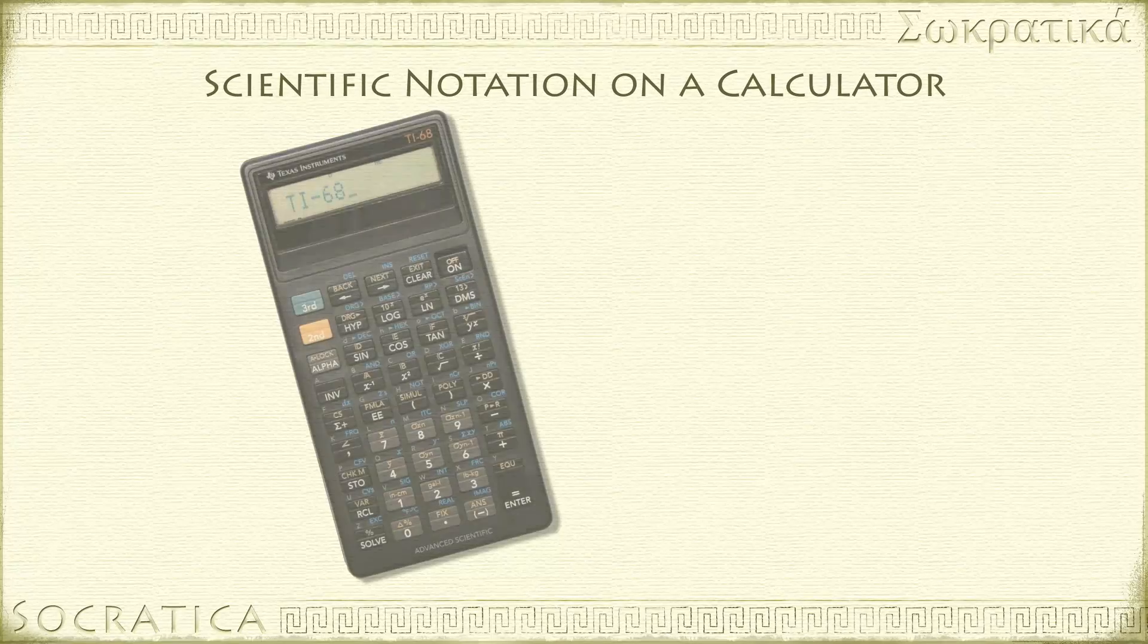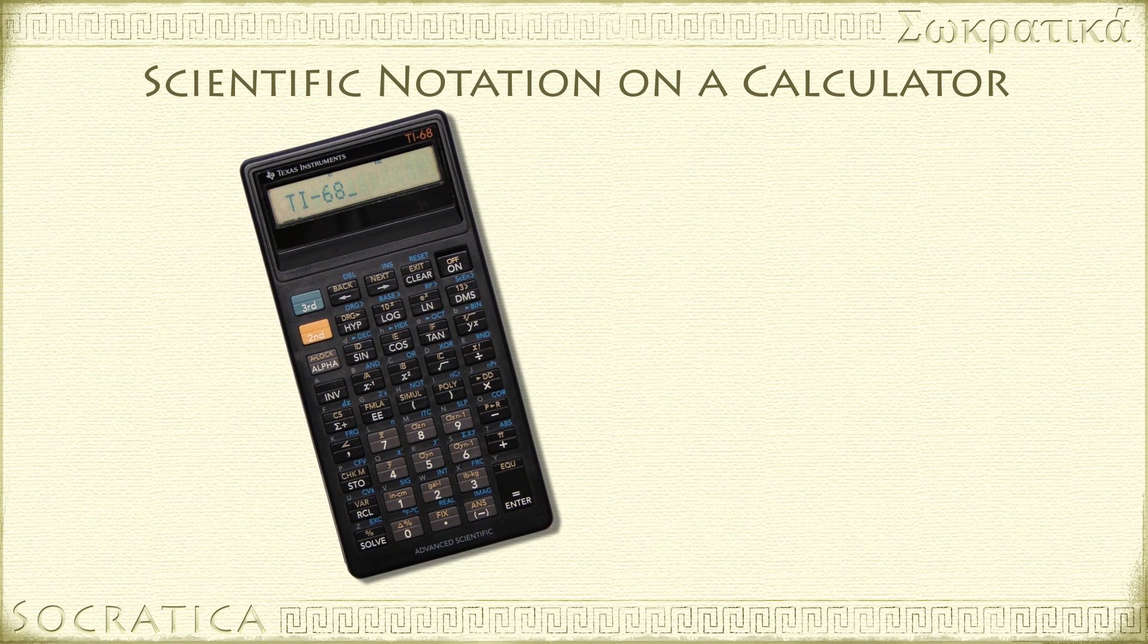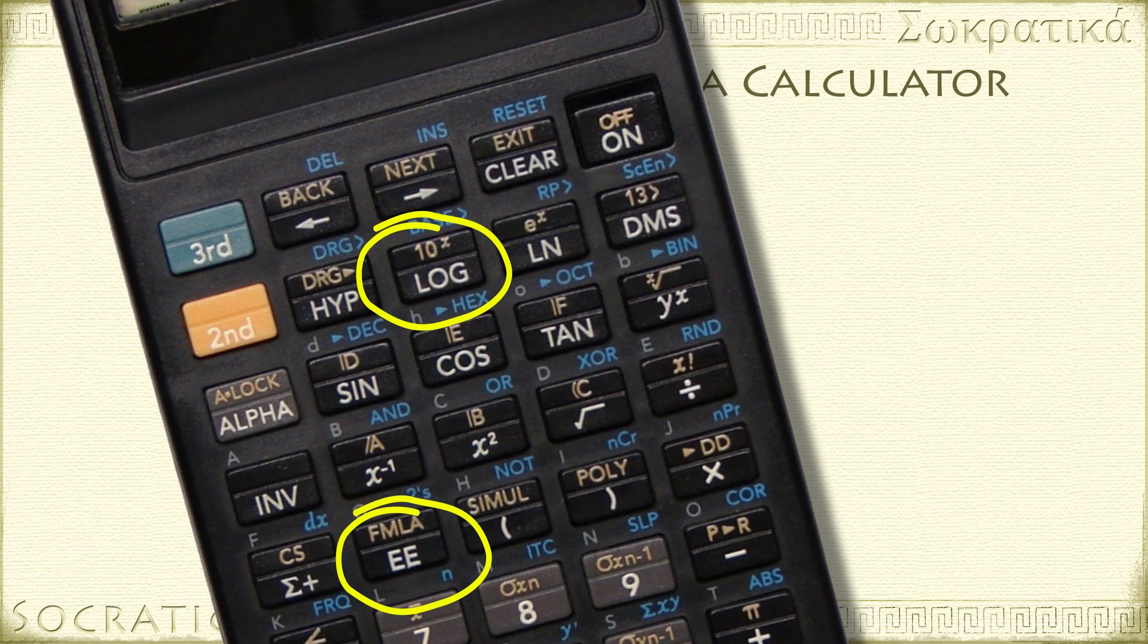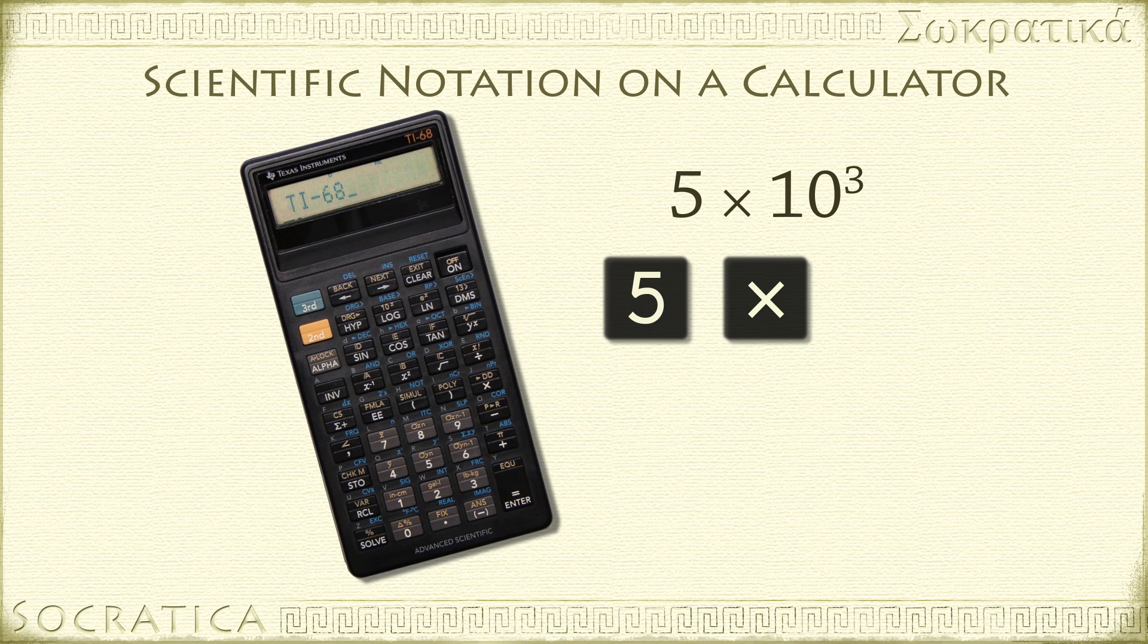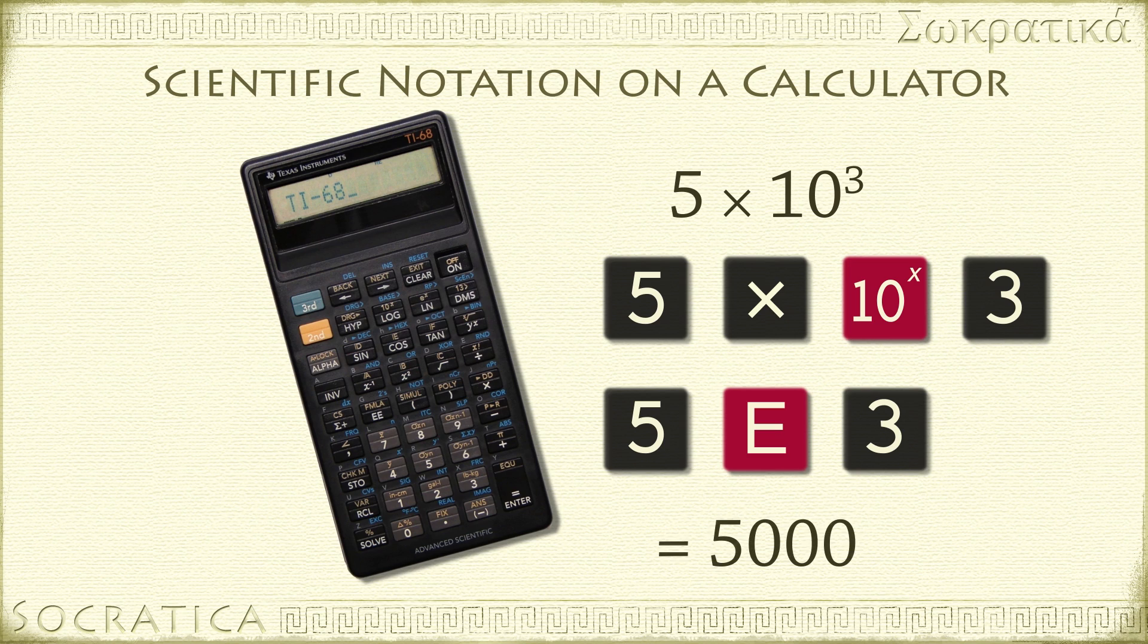If you're working with scientific notation on a calculator, make sure you know how to enter in these values correctly. It depends on the calculator. There may be a 10 to the x button, or there may be a button that says e. These mean the same thing. If you want to enter in 5 times 10 to the 3, you would type in 5, then the multiply button, then 10 to the x button, then 3. Or you would type in 5, then the e button, then 3. Either way, you'll get 5,000.